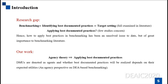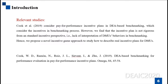DMUs are denoted as agents, and whether best documented practice will be realized depends on their own utilities. That is, our work provides an agency perspective on DEA-based benchmarking. There are several related studies; for example, Cook considered preferred performance incentive plans in DEA-based benchmarking, which considers incentives in the benchmarking process. However, we find that the incentive plan is not derived from a standard incentive perspective, because it lacks interpretation of DMU behaviors in benchmarking. Therefore, we propose another incentive game approach to describe real incentive plans for DMUs.